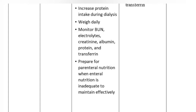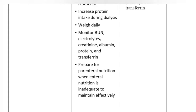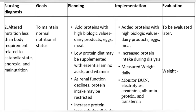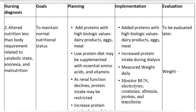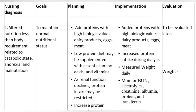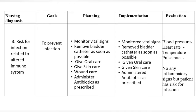Prepare for parenteral nutrition when enteral nutrition is inadequate. Implementation: Added proteins with high biologic values — dairy products, eggs, meat. Increased protein intake during dialysis. Measured weight daily. Monitored blood urea nitrogen, electrolytes, creatinine, albumin, protein, and transferrin. Evaluation: Weight.